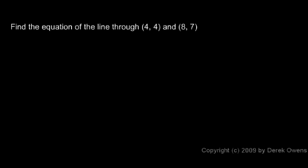Here we're told to find the equation of the line through the point (4, 4) and the point (8, 7). What we'll do first is find the slope.